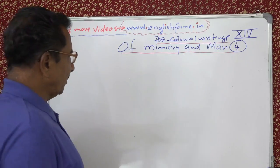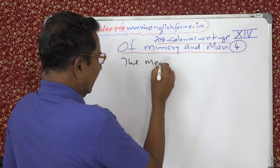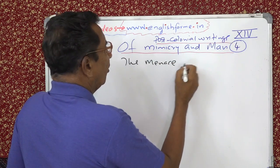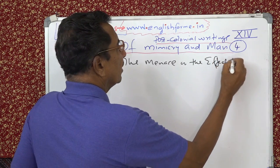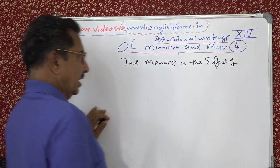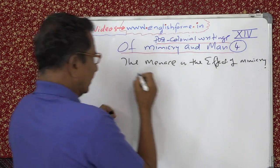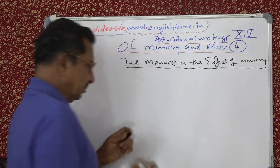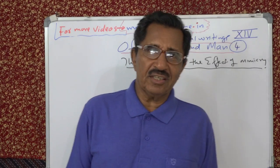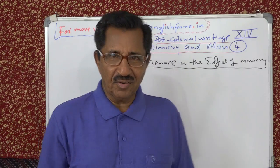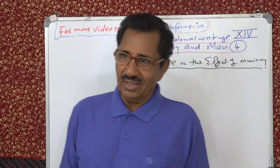Our next topic to discuss is the menace — M-E-N-A-C-E — the effect of colonial mimicry. Menace means the danger, the dangers of colonial mimicry. There are about more than 24 dangers I can list. We will do half of it today, and the rest half tomorrow.